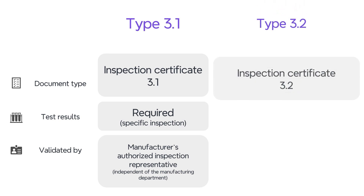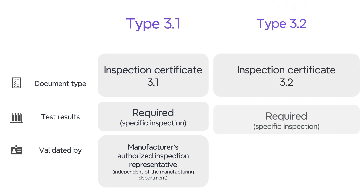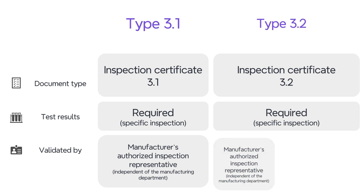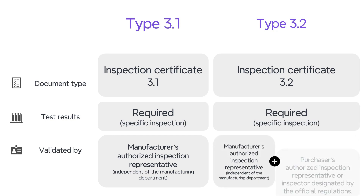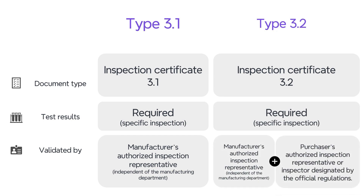Inspection certificate 3.2 is similar to 3.1, but the document is also validated by either the purchaser's authorized inspection representative, or an inspector designated by the official regulations.